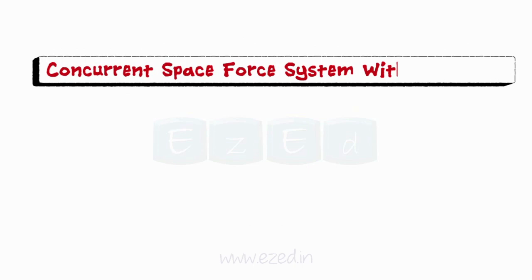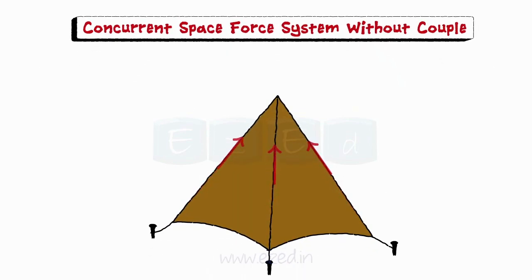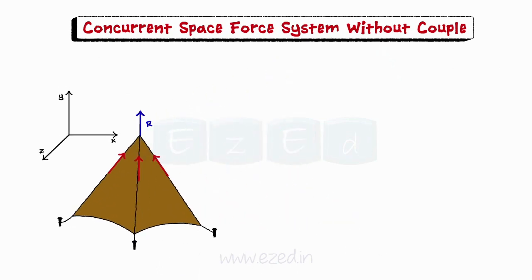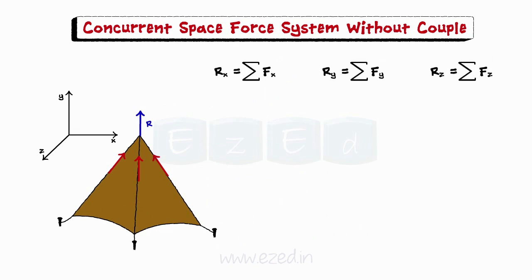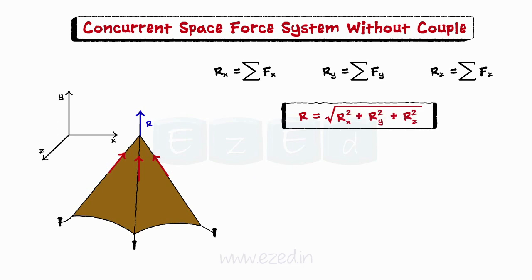Let us now consider a concurrent space force system without couple. In such a system, the resultant is a force acting through the point of concurrence of the given forces. The x, y, and z components of the resultant are calculated using summation of all forces among all three directions respectively. Hence, we can find the resultant using the formula shown.